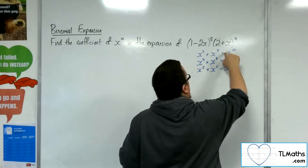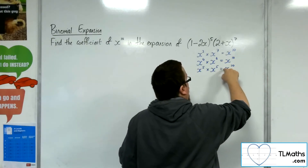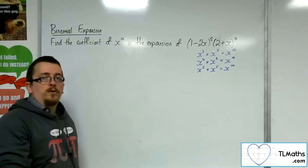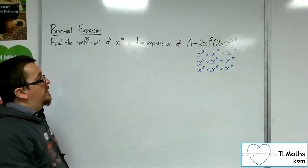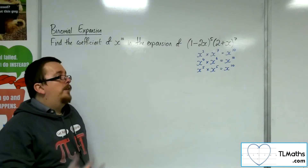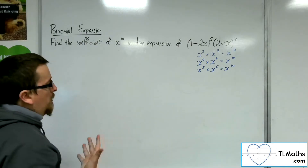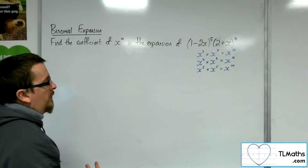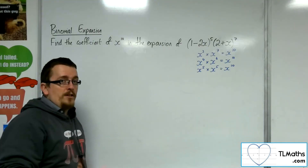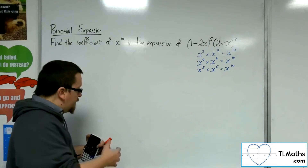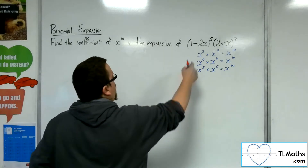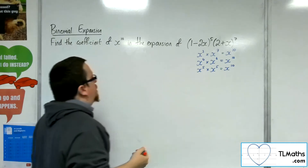Once I've found those three coefficients, I add them all together to get the overall coefficient for x to the 10. It's quite a long job, but it'll teach us the procedural method. Let's find the x cubed term in the first bracket.